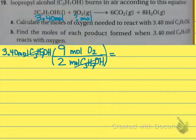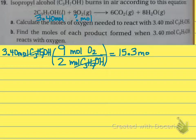So we're going to take 3.4, multiply it by 9, and divide it by 2. We should have 3 significant figures, so we get 15.3 moles of oxygen.